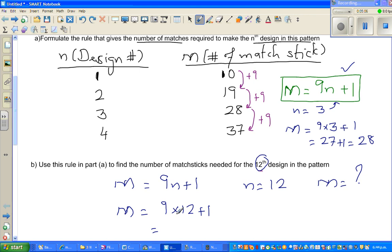So m would be 9 times 12 plus 1. You can use a calculator, but 9 times 12 is same as 12 times 9, which is 108. Which is 109.